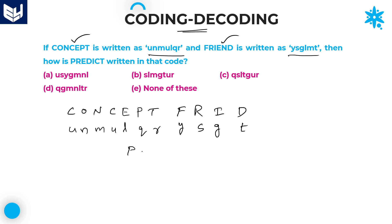Now, the question is asking, what is the code for PREDICT? We need to write the code for predict. Here, P is nothing but Q. R is equal to S. E is equal to L. D is equal to T. I is equal to G. C is equal to U. And T is equal to R.